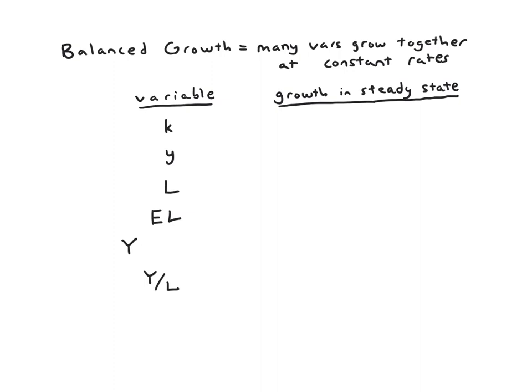And balanced growth refers to this idea that you could have many variables growing together at constant rates in a steady state. And we said that, you know, sounds kind of dumb. Isn't the whole point of a steady state that things aren't changing? And we oversimplified before. What happens in a steady state is that some things don't change. So specifically, little k won't be changing. The growth of little k in our table will start filling out. The growth of little k will be zero. That's the definition of the steady state. K is steady.